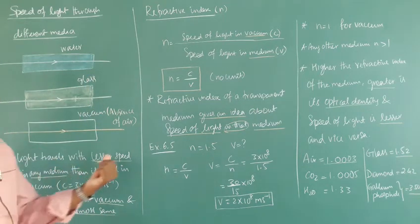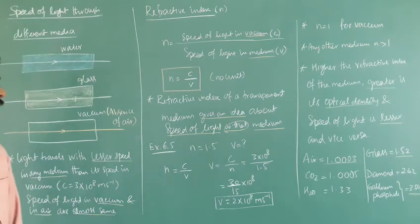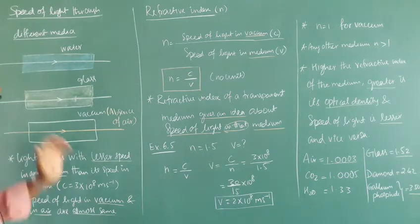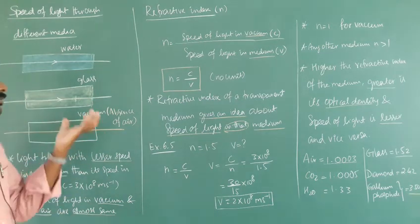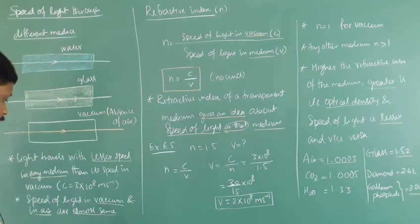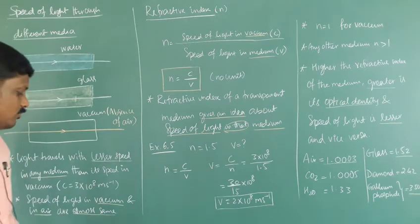Light travels with lesser speed in any medium than its speed in vacuum, which is 3×10⁸ meters per second. So light travels at lesser speed in media like water and glass compared to vacuum, where it travels at the greatest speed — vacuum meaning the absence of air.